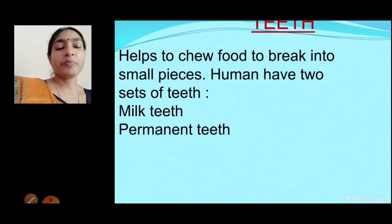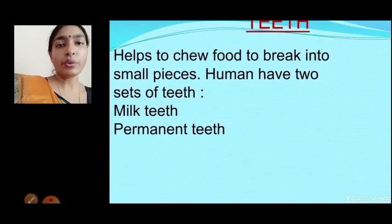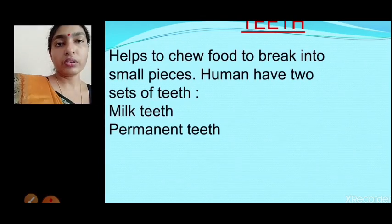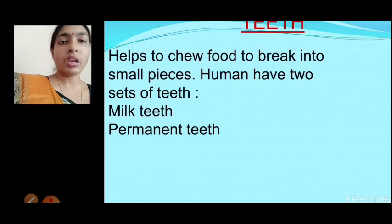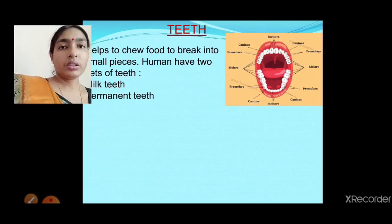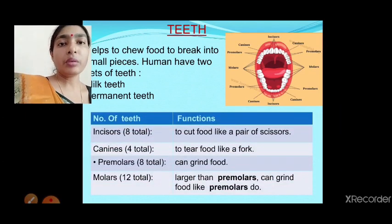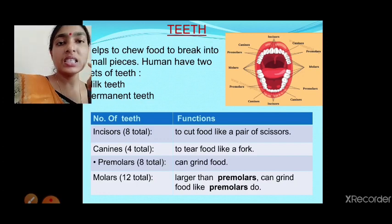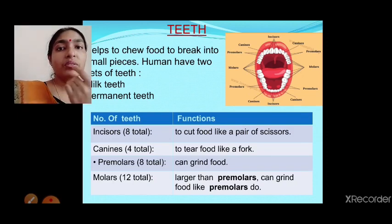Both milk teeth and permanent teeth are present in all human beings. After reaching adult age, we all have permanent teeth — a total of 32 teeth. If we open our mouth we can see our teeth and tongue. The teeth are arranged in two jaws — lower jaw and upper jaw — with 16 teeth in each. The first front four teeth on top and four on the bottom are called incisors.